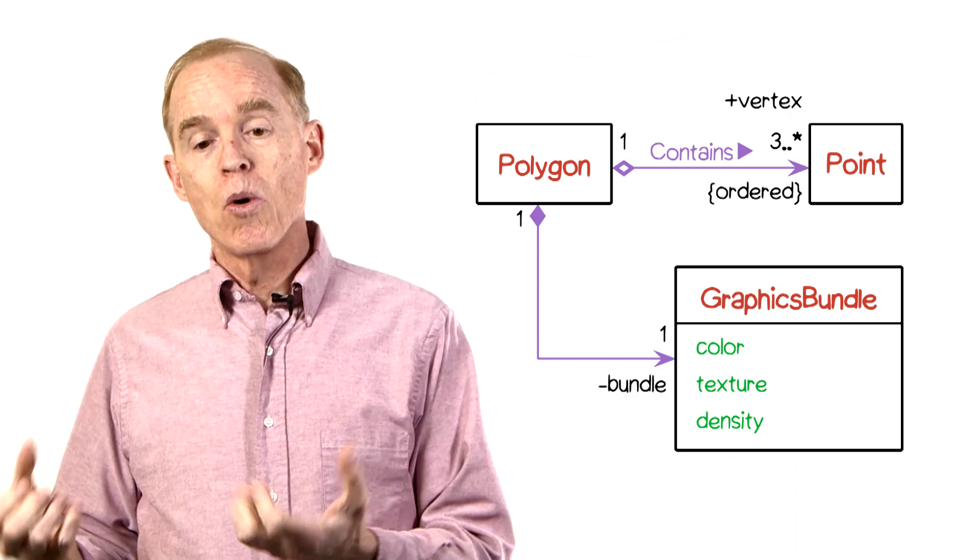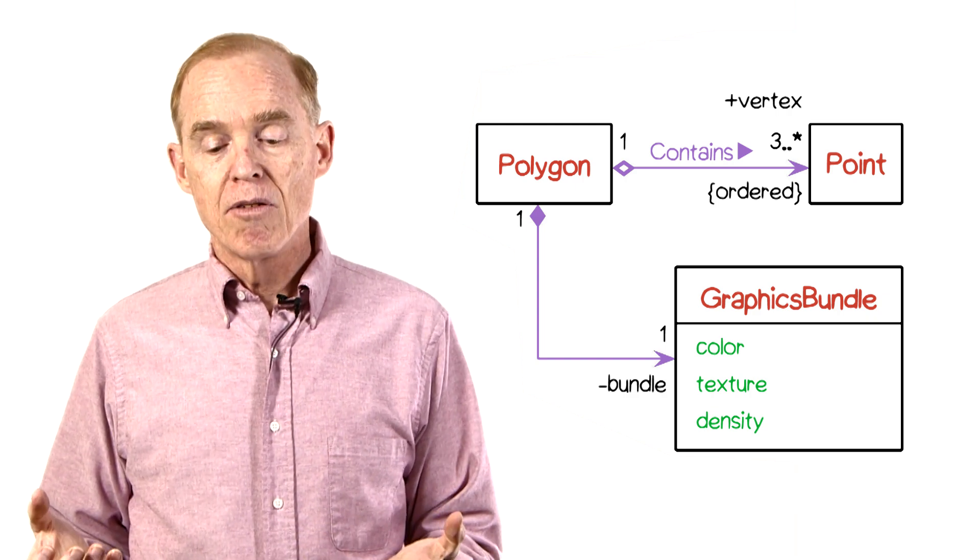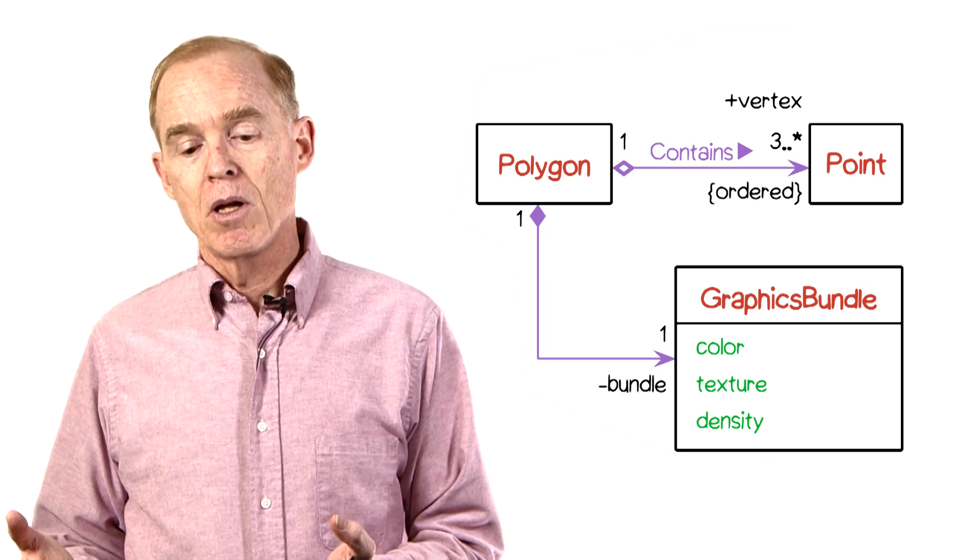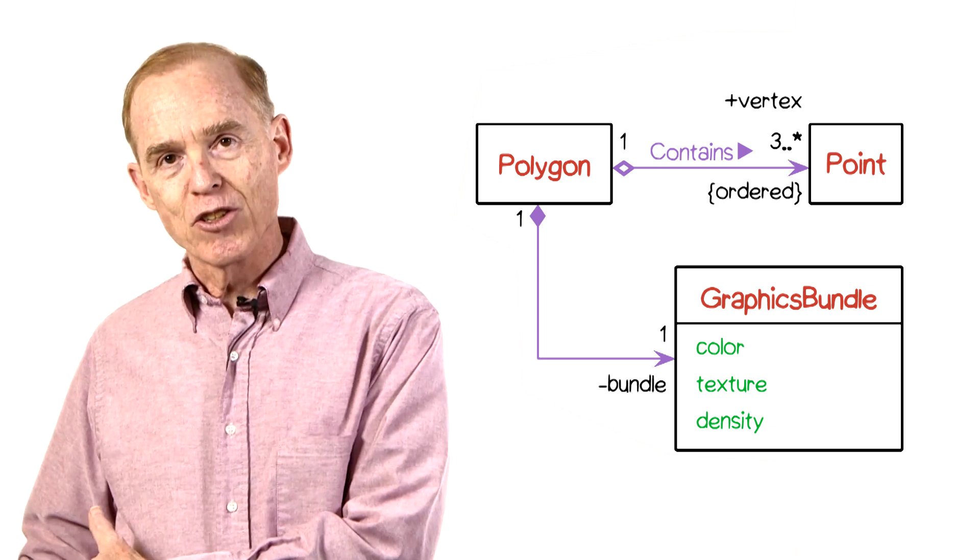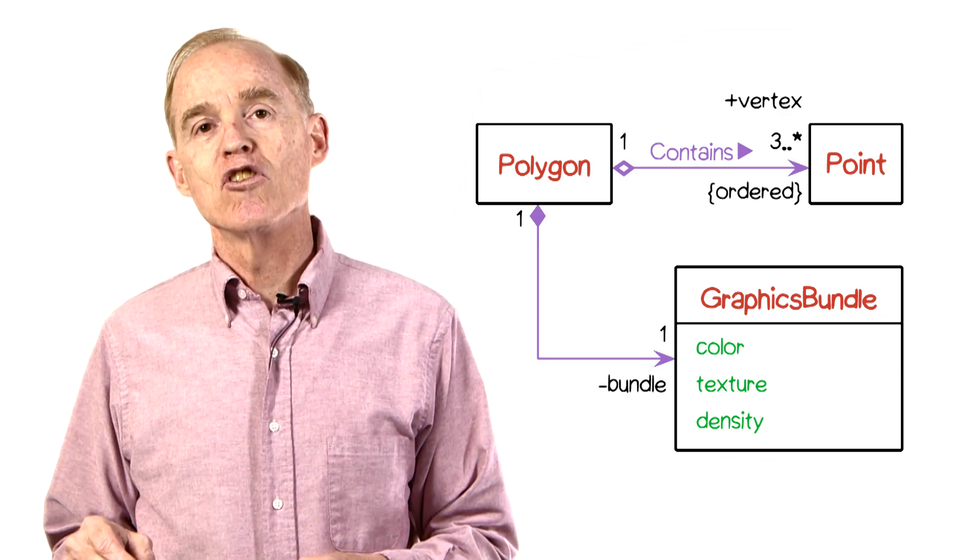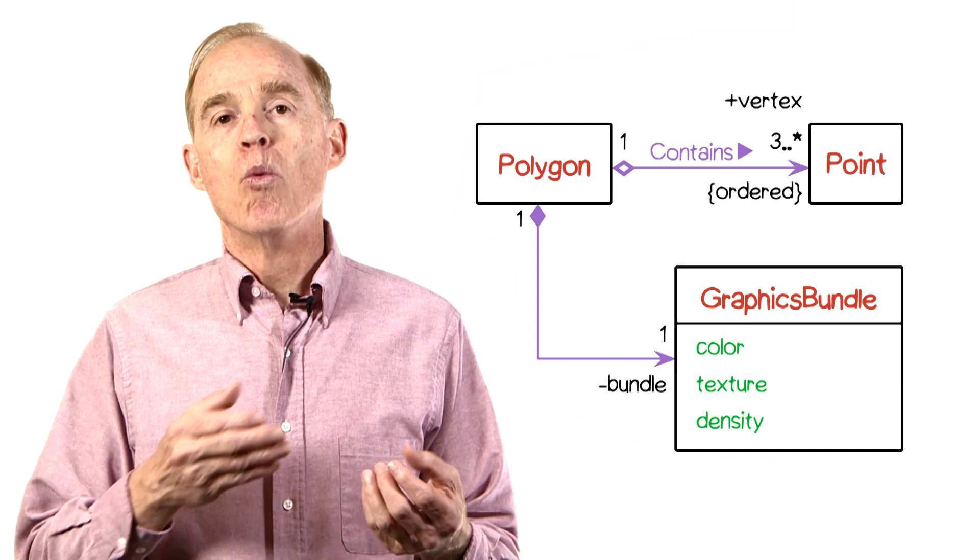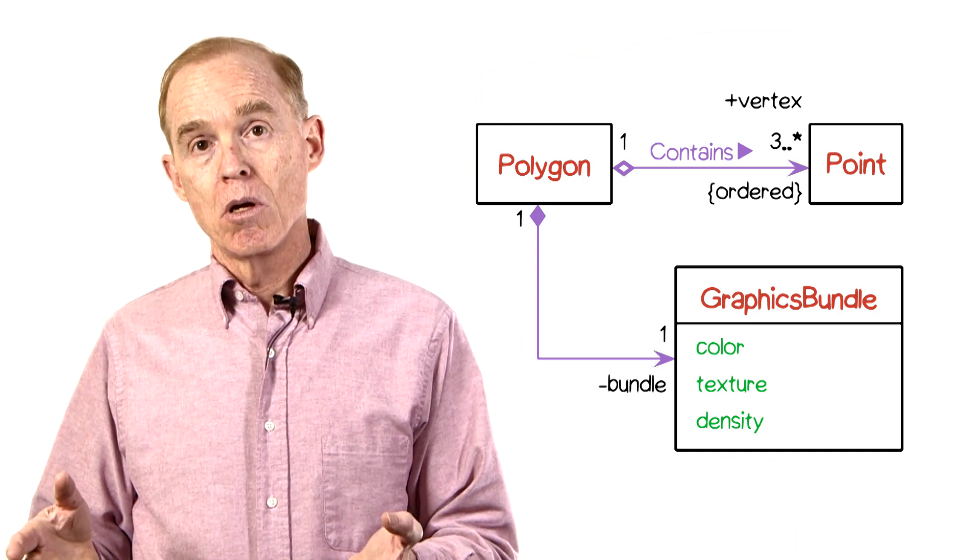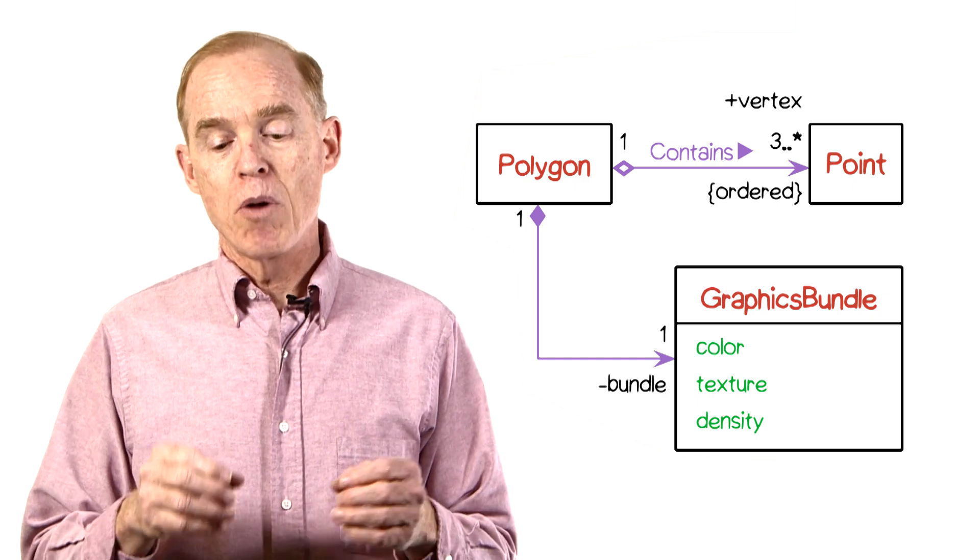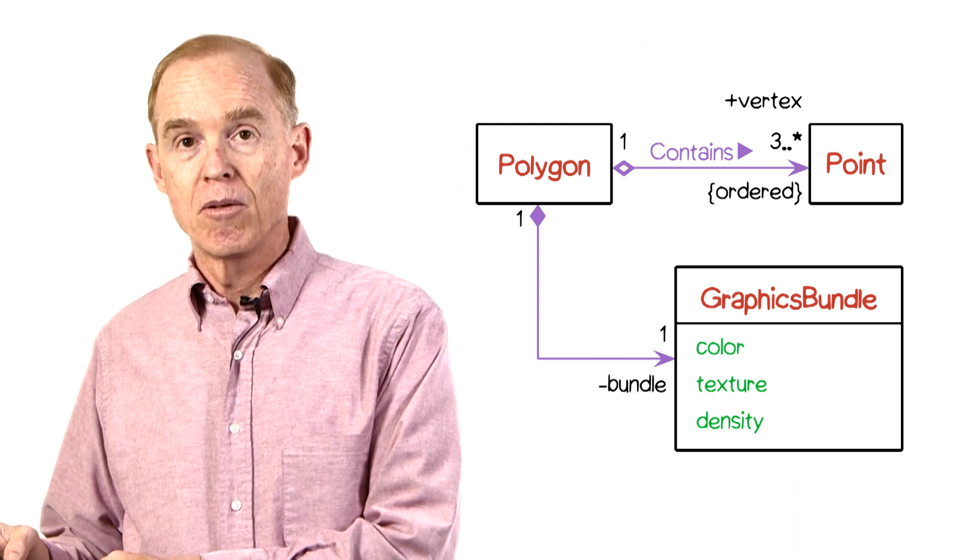Between polygon and point, we have an association called contains. That is, a polygon contains points. The little filled triangle to the right of the word contains means that when reading aloud that particular relationship, you would read from left to right. So polygon contains point. You wouldn't say point contains polygon. You would say something like point is contained by polygon.